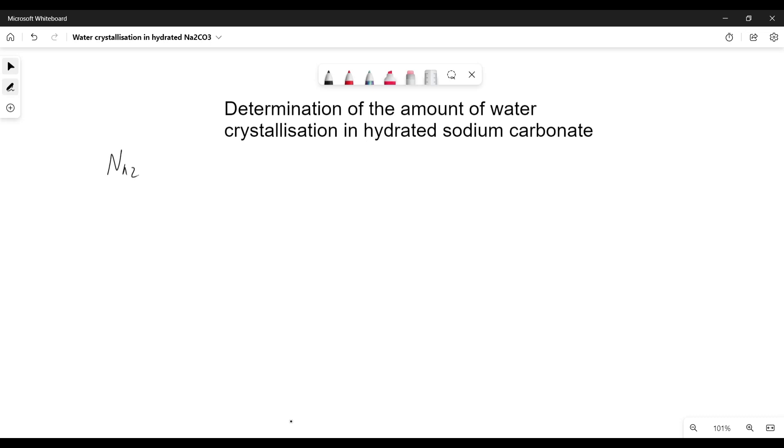Hydrated sodium carbonate would be Na2CO3 with a little dot and some amount of water surrounding that. The actual titration that occurs, which this equation will be given to you, will be sodium carbonate plus HCl, which is 2HCl.